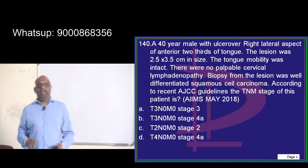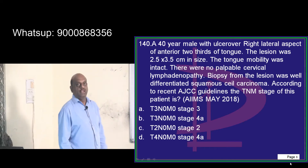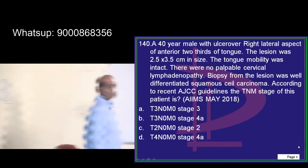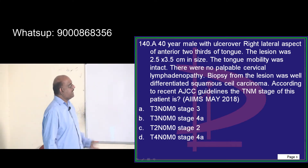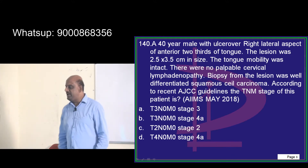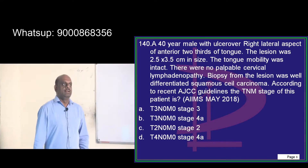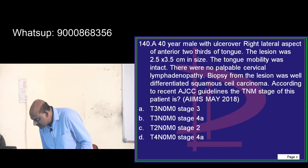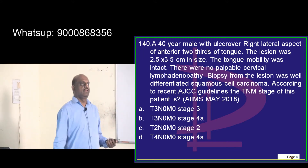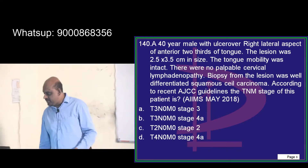A 40-year-old male has a lesion on the right lateral aspect of the anterior two-thirds of the tongue, 2.5 to 3.5 centimeters in size. Biopsy shows squamous cell carcinoma with no palpable cervical lymphadenopathy. What is the TNM stage? One student suggests that the recent update recommends endoscopic removal in emergency — a good point worth rechecking.